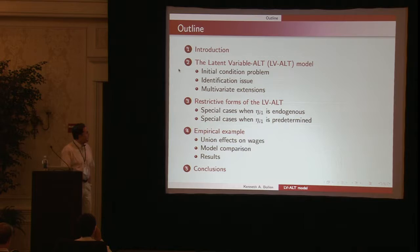This is an outline of what I'd like to go over. First, I'm going to talk about the general model, how initial conditions are an issue to examine here and two different approaches to it, identification issue, and then multivariate extensions. Then take a little bit of time to show how we can go from this general model to special cases. Finally, we'll look at an empirical example.